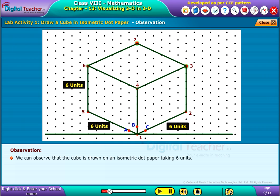We can observe that the cube is drawn on an isometric dot paper taking 6 units.